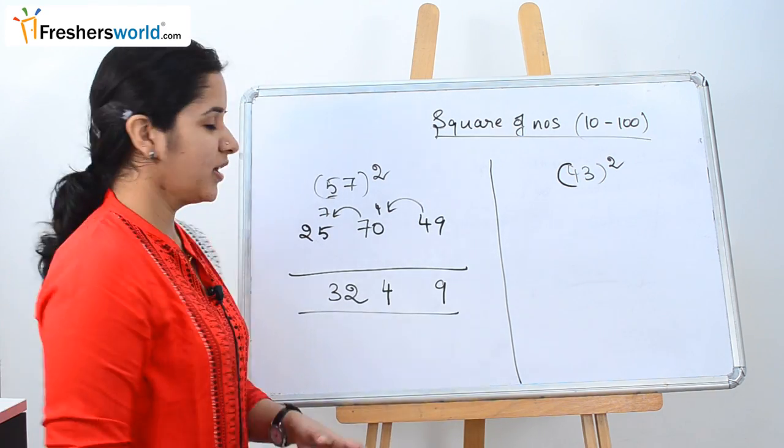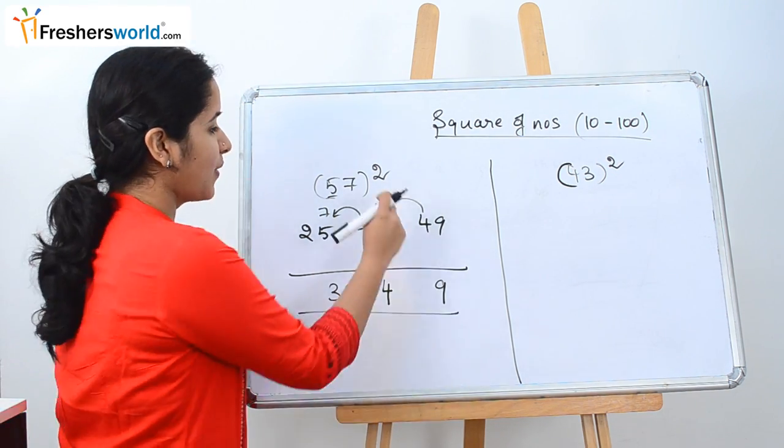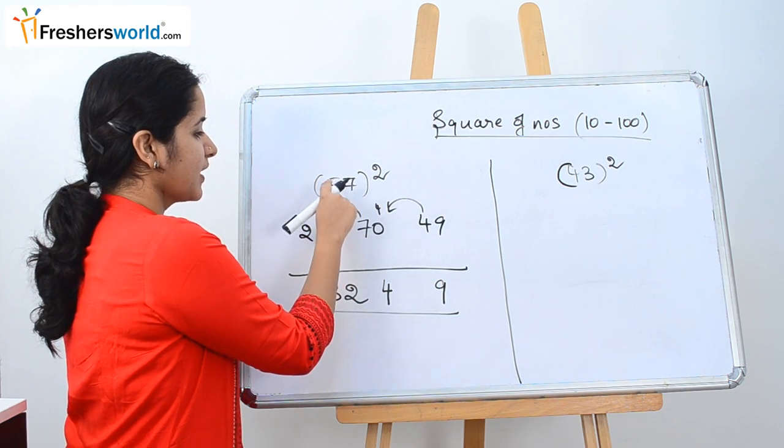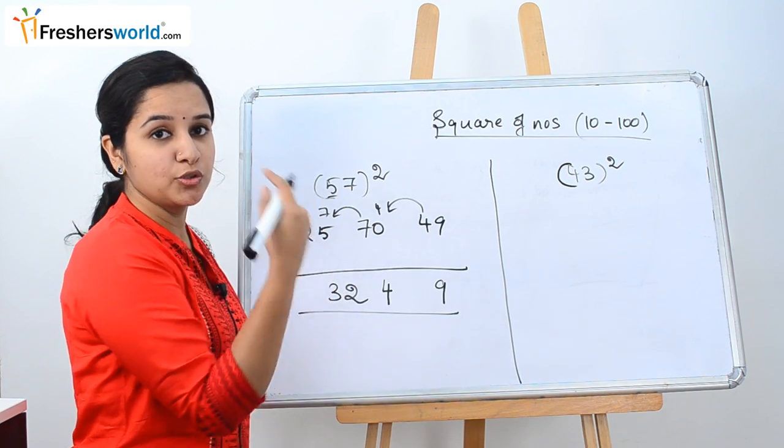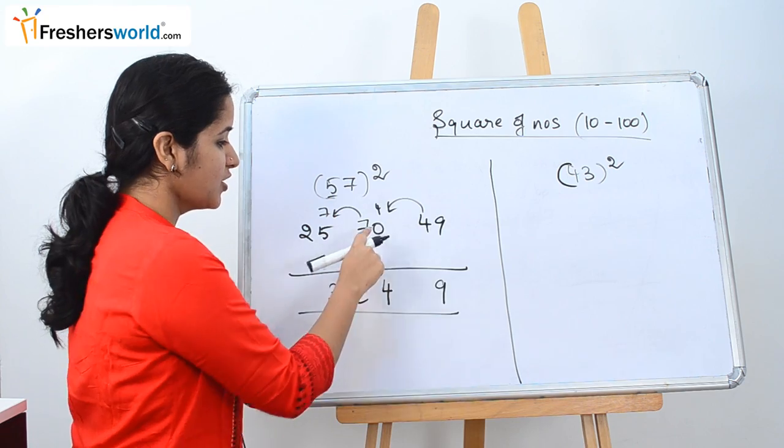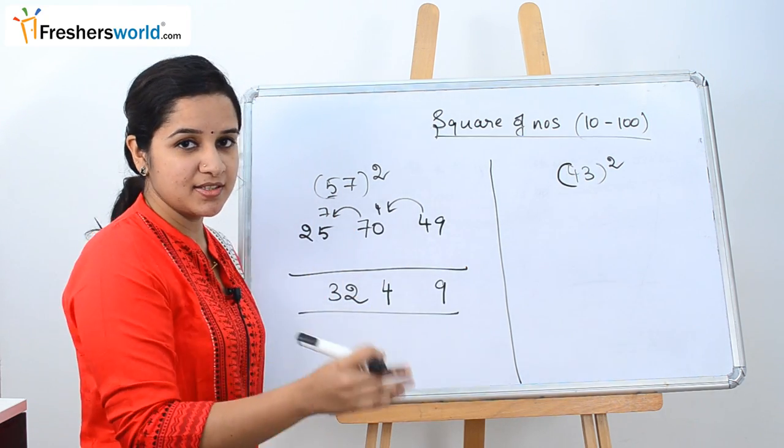So what did we do here? We square the first number 5 which is nothing but 25. Then square the last number 7 which is nothing but 49. Then what did we do for the middle number? 5 into 7 into 2 which is nothing but 5 into 7 into 2 is nothing but 70. So we write it here. So then for the next step,